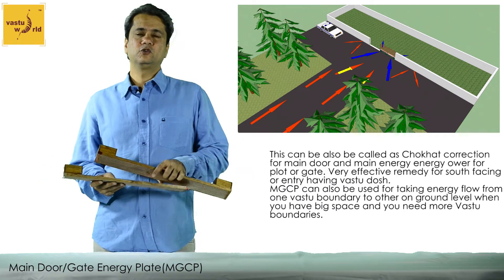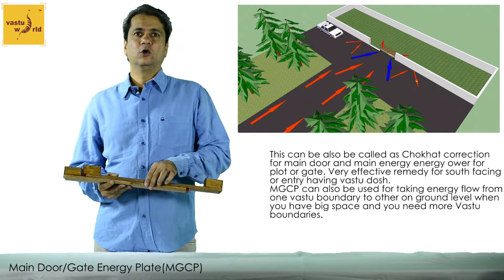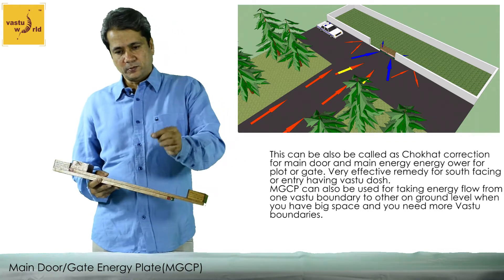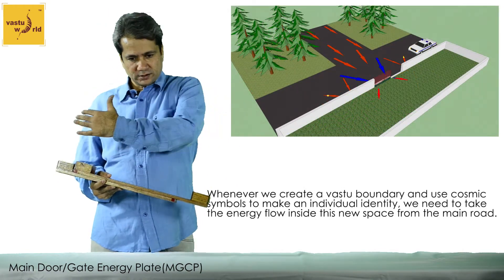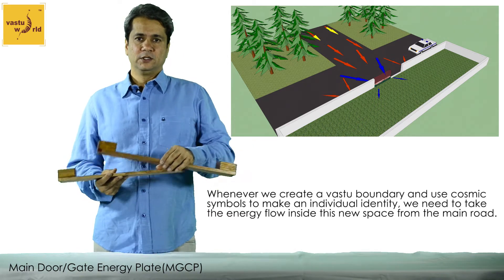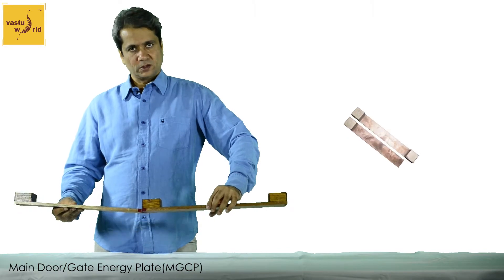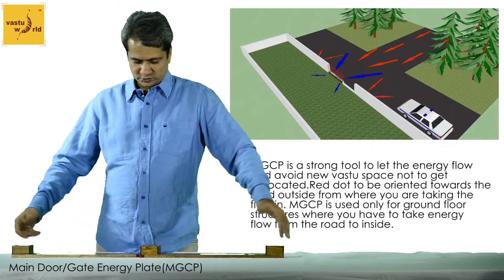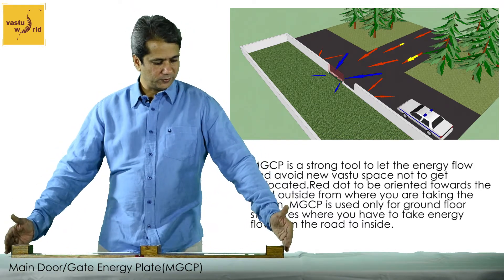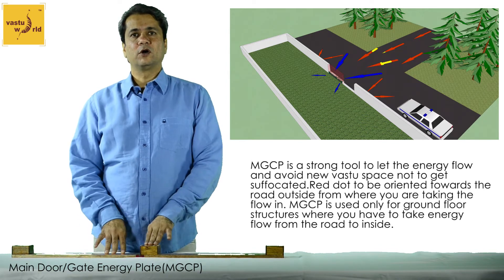In India, we used to have a solution called Chaukhat or Umbrapatti — a Hindi or Marathi word. Whenever you are entering a house, you have an energetic footprint below your main door. This is the fourth dimension where we put it inside the earth, below your main door. It is almost the size of a main door, then put tiles on top of it, and you have a door frame around it, as you can see in the figure.